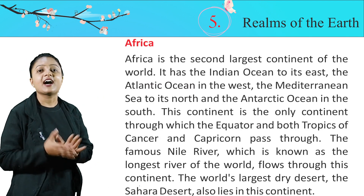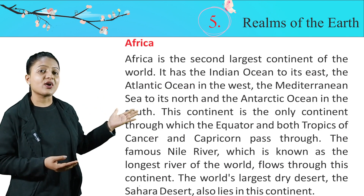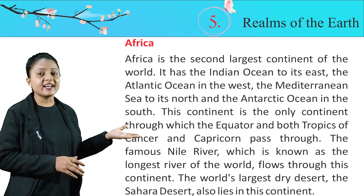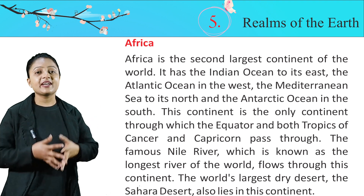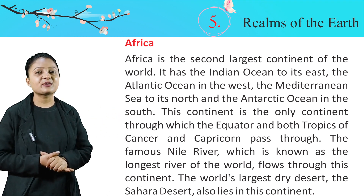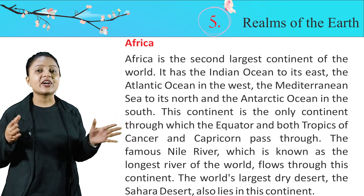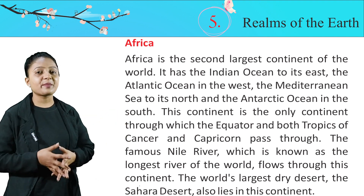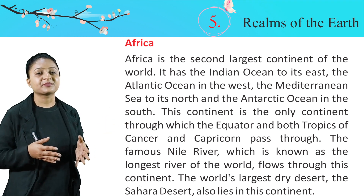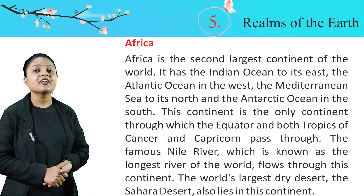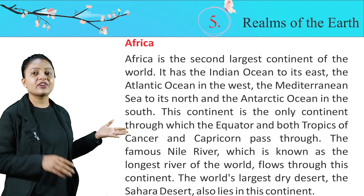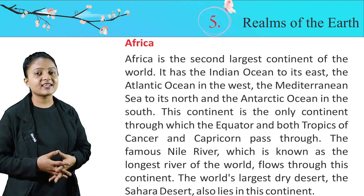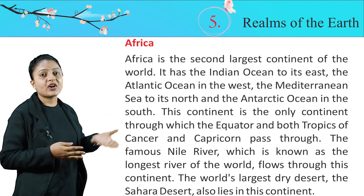Now, let's talk about Africa. Africa is the second largest continent of the world. It has the Indian Ocean to its east, the Atlantic Ocean in the west, the Mediterranean Sea to its north, and the Antarctic Ocean in the south. This continent is the only continent through which the equator and both the Tropic of Cancer and the Tropic of Capricorn pass through. The famous Nile River, which is known as the longest river of the world, flows through this continent. The world's largest dry desert, the Sahara Desert, also lies in this continent.